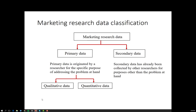Where does qualitative research sit within the research classification system? It sits underneath primary data and is data retrieved for a particular purpose to address the problem at hand. But qualitative data refers to not numbers essentially — it refers to words, images, sounds, film. It refers to everything that is not a number.